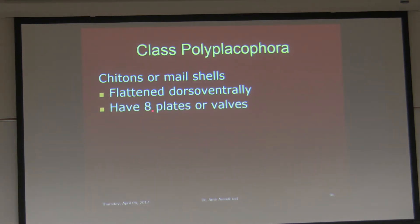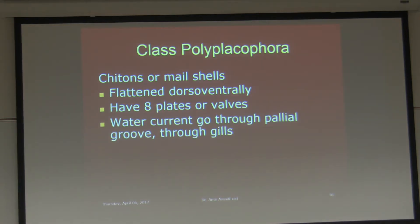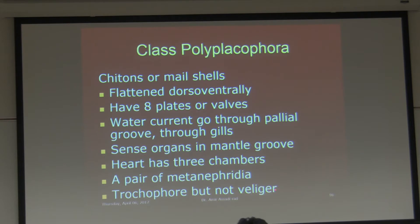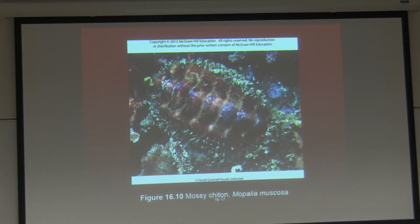They are flattened dorso-ventrally, they have eight plates or valves, and the current goes through pallial grooves through the gills. Sense organs are in mantle grooves. The heart has three chambers, a pair of metanephridia. These have trochophore larvae but do not have veliger larvae. We do not have trochophore larvae in the lab, but we have veliger larvae slides. Here is a picture of a chiton — class Polyplacophora — one, two, three, four, five, six, seven, eight plates. The specimens in the lab look like mail slots from old apartments.